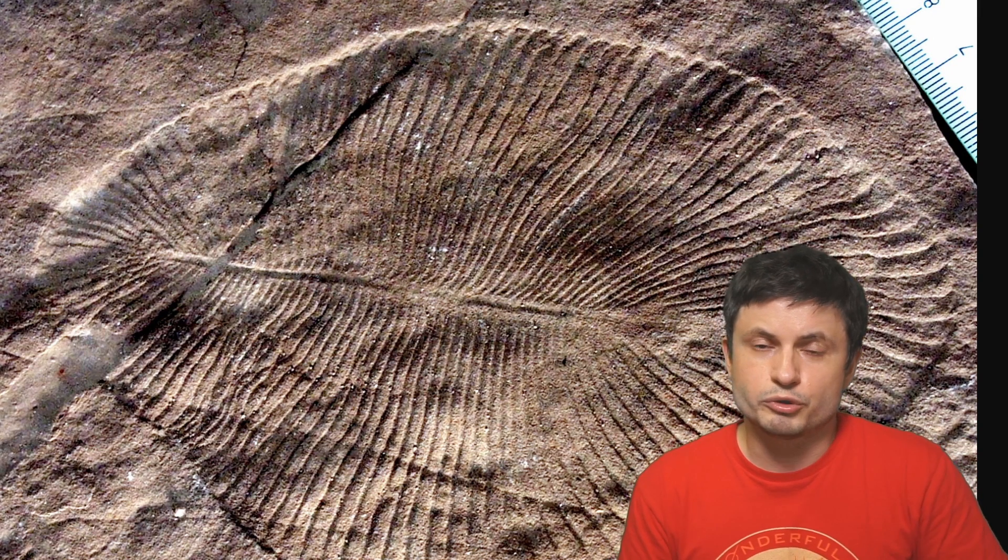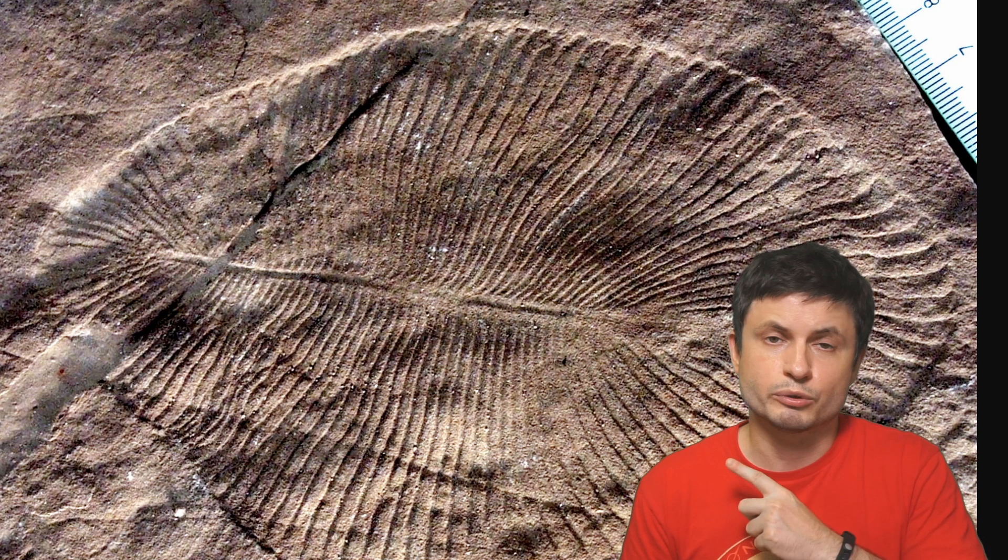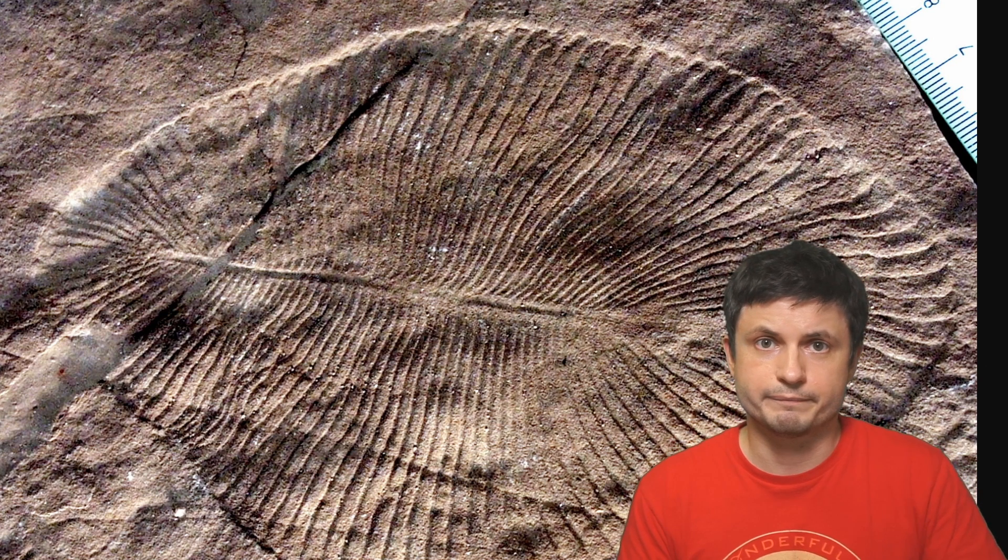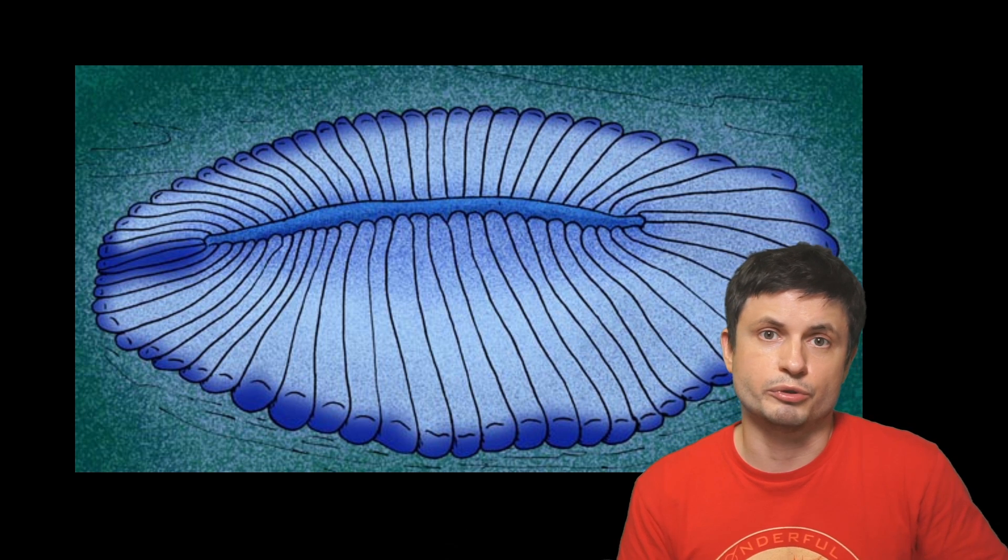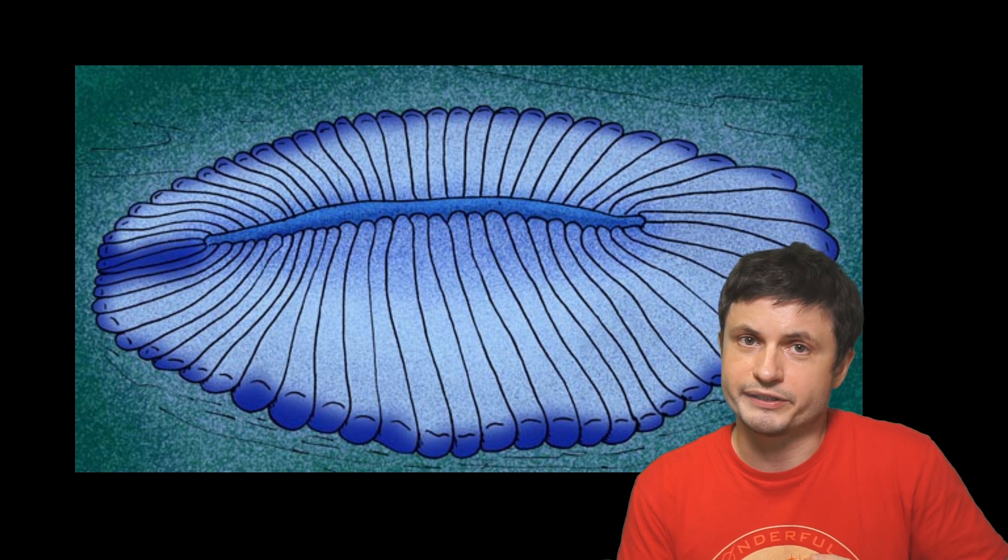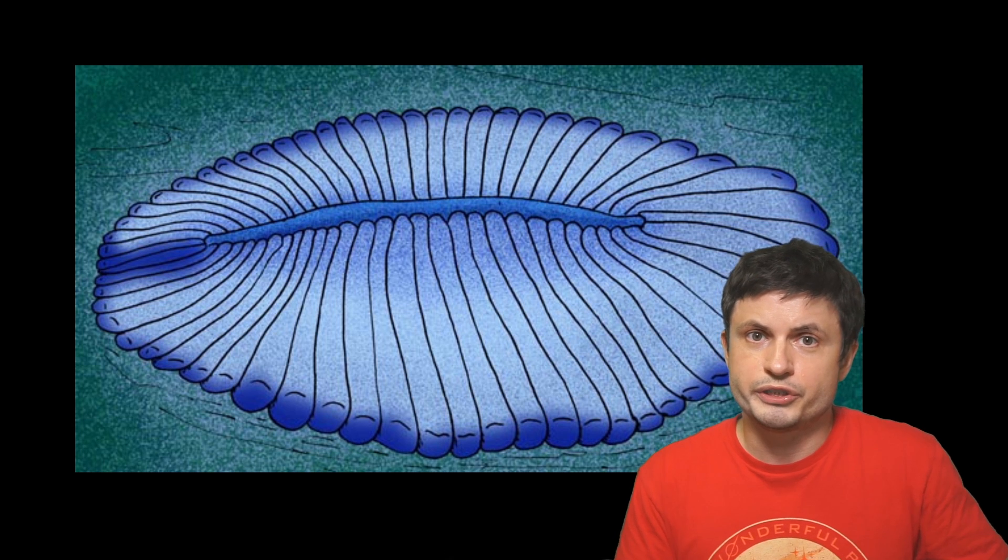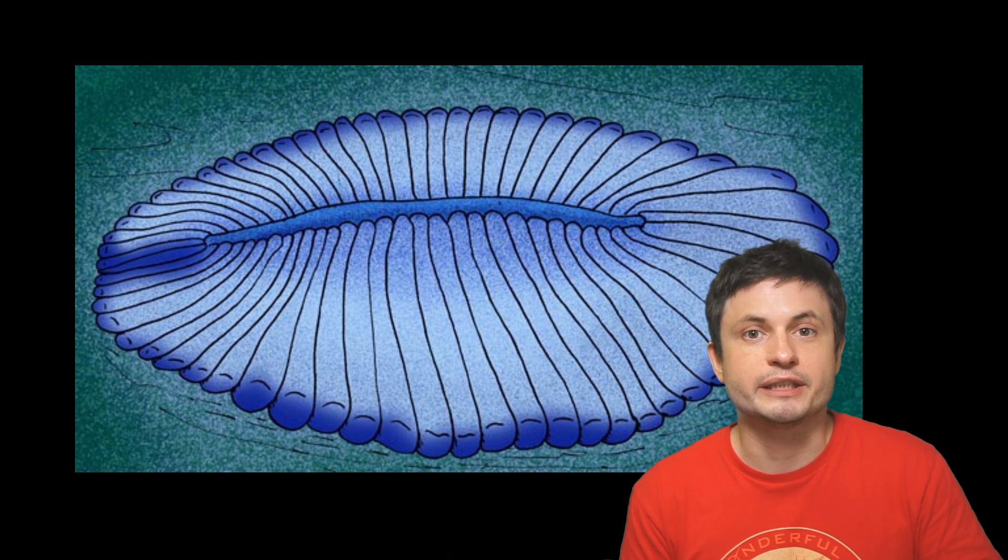But when it comes to the oldest animal on the planet, most scientists agree that it was probably the fossil of this animal right here known as the Dickinsonia. Something that probably looked like this. And not so long ago it was discovered that there was some sort of a cholesterol present inside this animal providing necessary molecular evidence to suggest that this was indeed an ancient animal.